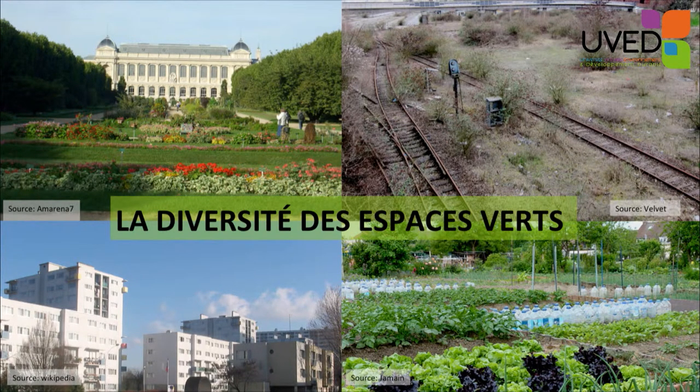Now we have to consider diversity and complementarity with green spaces. There are parks with ornamental flowers, wasteland, gardens, vegetable gardens, and lawns around buildings. The quality of the green areas determines the biodiversity in town.